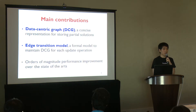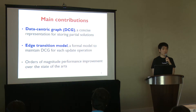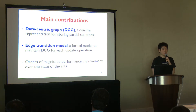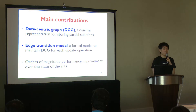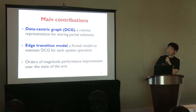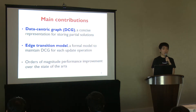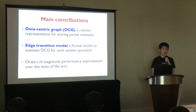In order to resolve these problems of existing systems, we proposed a new system, TurboFlux, with these main contributions. First, we proposed the data-centric graph, DCG for short, which is a novel representation for storing partial solutions very concisely. Second, we proposed a formal model named the edge transition model to maintain the DCG for each update operation. By using the DCG and edge transition model, TurboFlux outperforms the state-of-the-art systems by orders of magnitude.